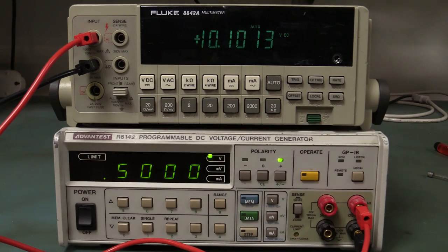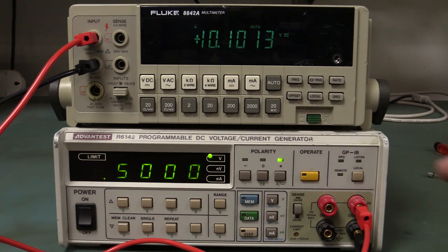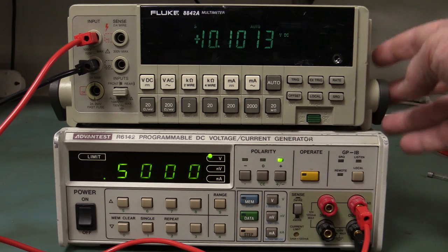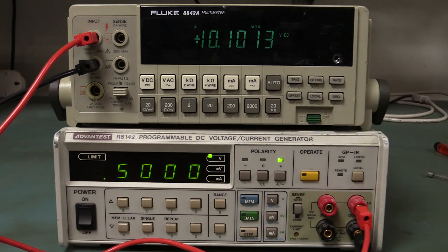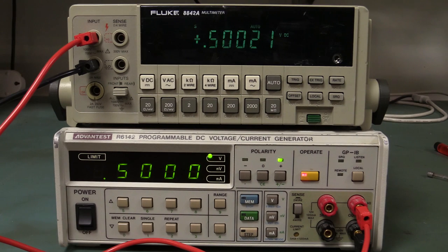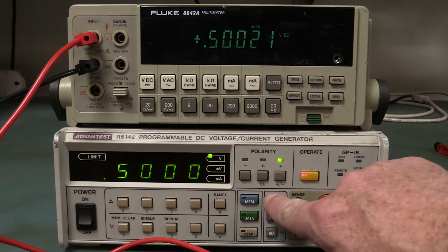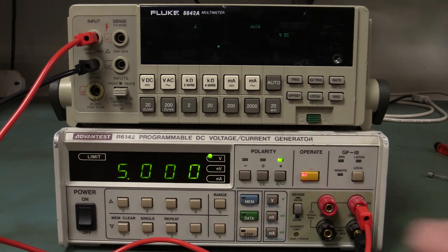Although this Advantest R6142 voltage current generator reference is not good enough to calibrate this thing, it's good enough for doing some basic checks. That's significantly out, so I'm not sure what that is in percentage but that's not terrific. But let's go up a range.